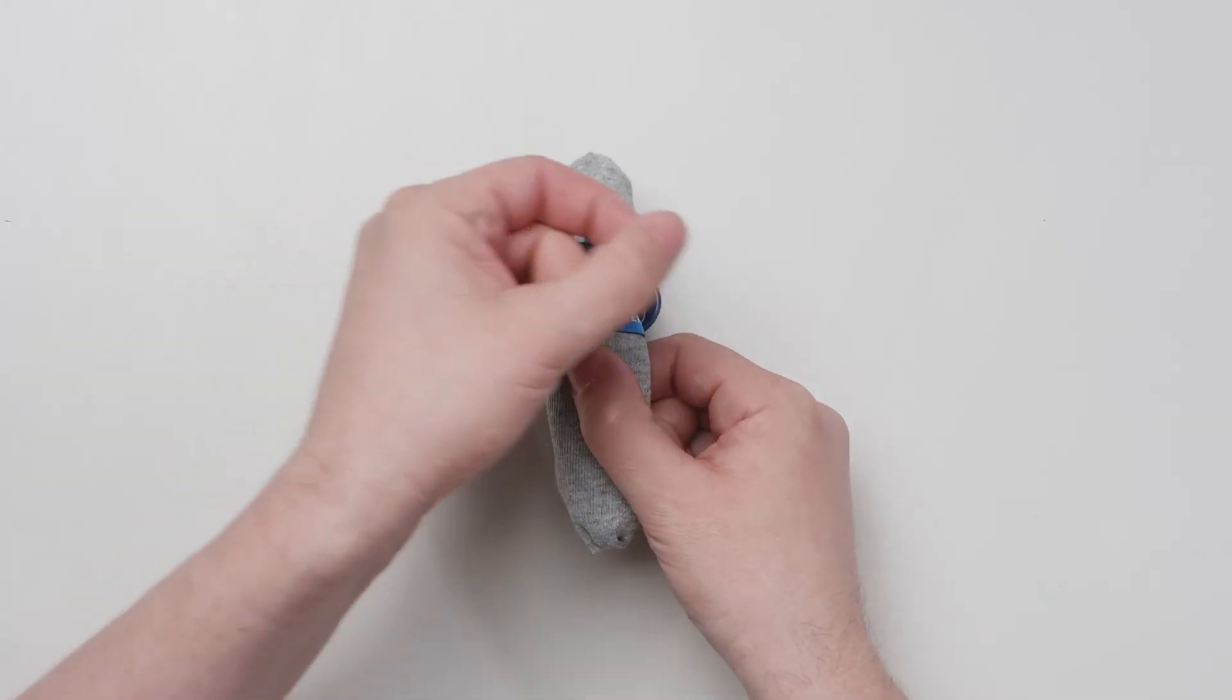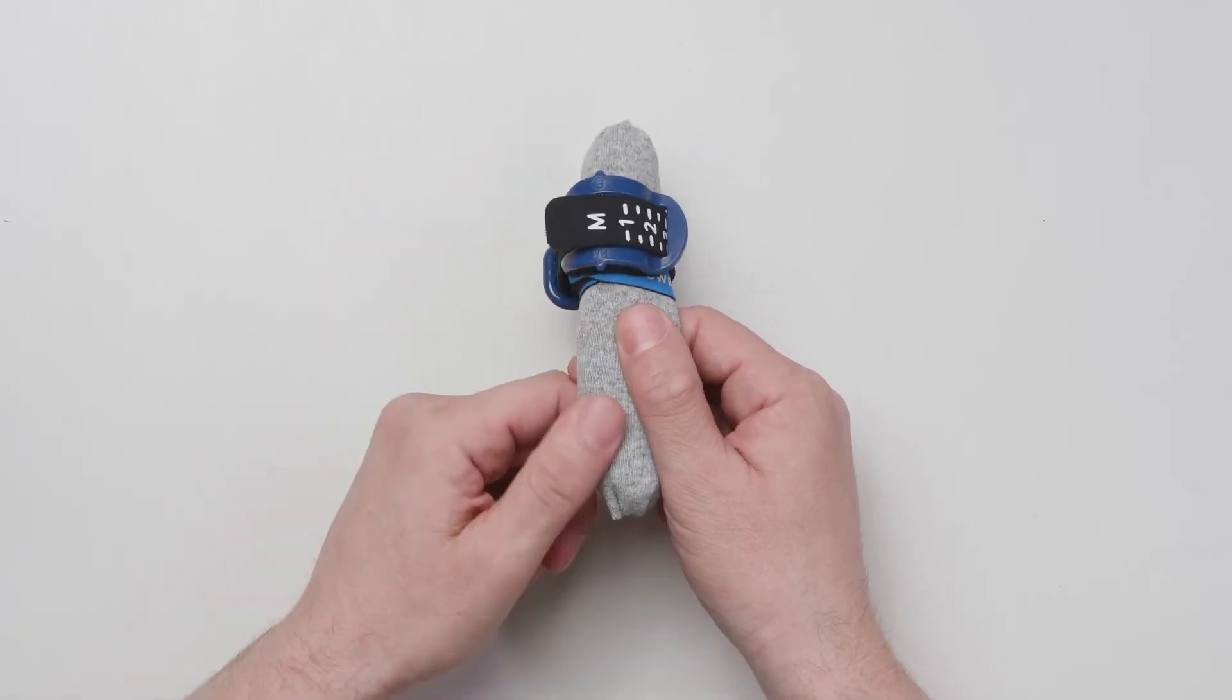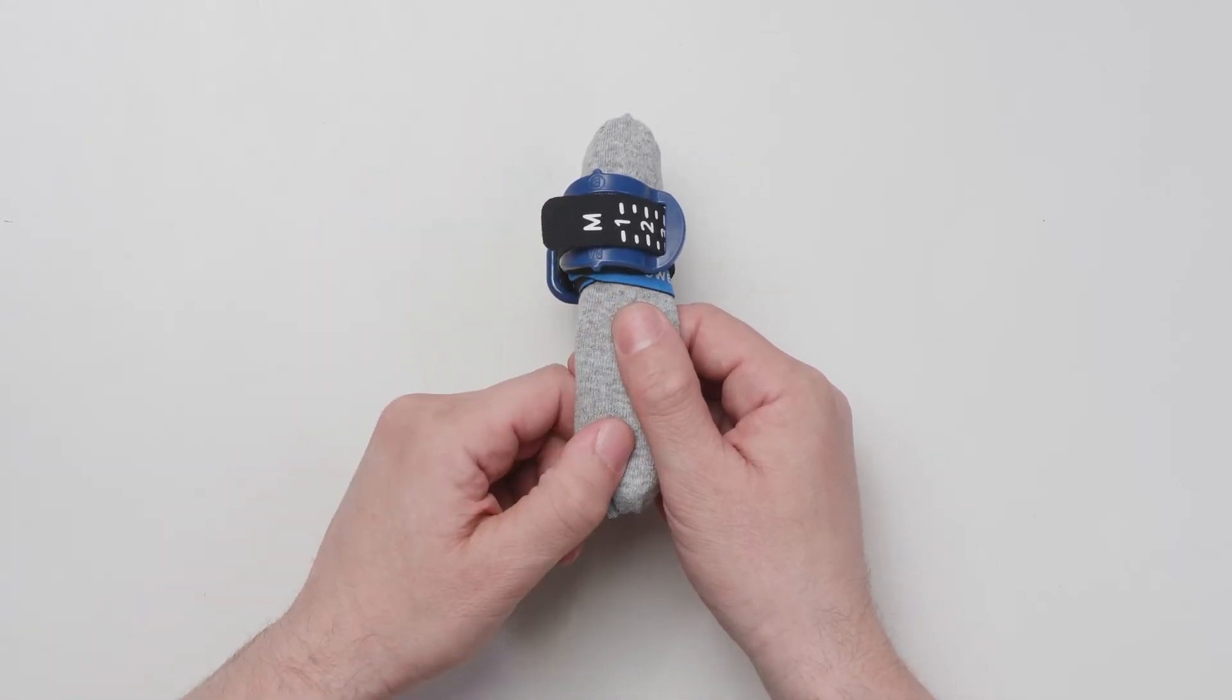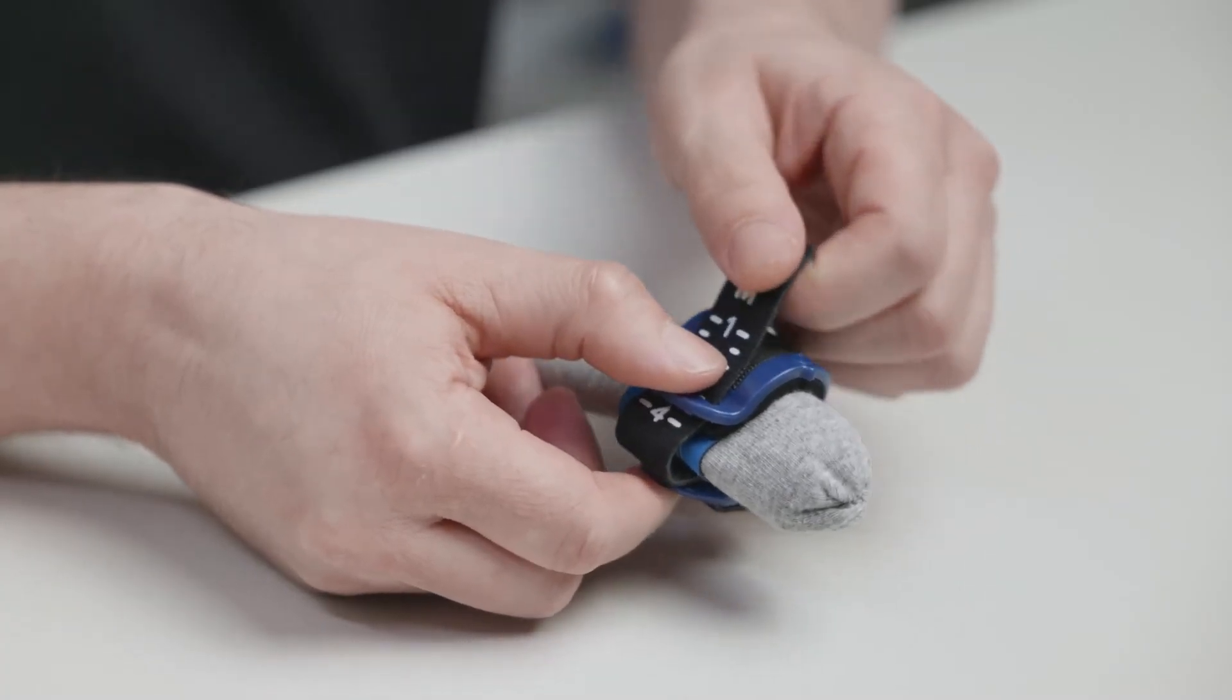Empty the bladder every one or two hours by releasing the compression of the Pacey Cuff. There is no need to remove the Pacey Cuff or the power sleeve during urination.